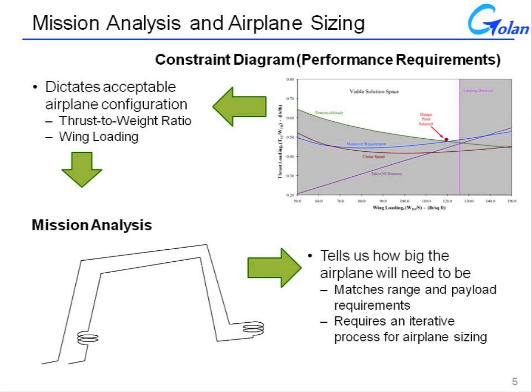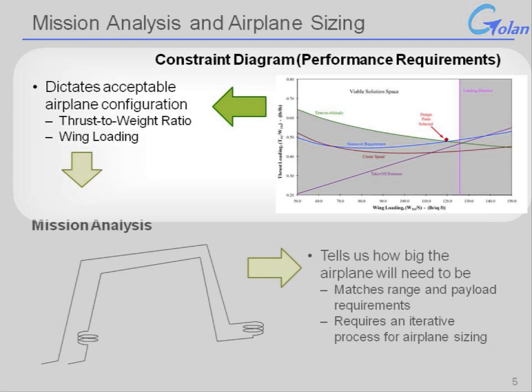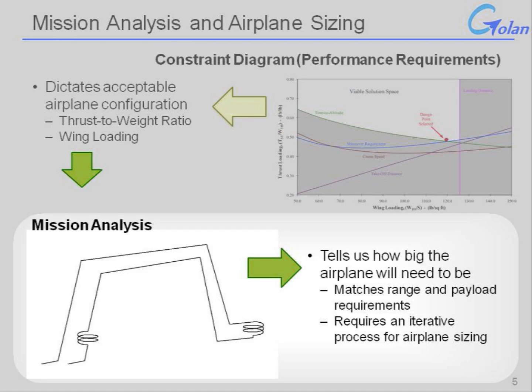So the process usually is to use the constraint diagram and the performance requirements to tell us what the thrust-to-weight ratio and wing loading need to be to meet all of the performance criteria, and in turn to use the mission analysis to tell us how big the airplane needs to be to match the range and payload requirements. This is typically an iterative process, as we will see in the next sequence.